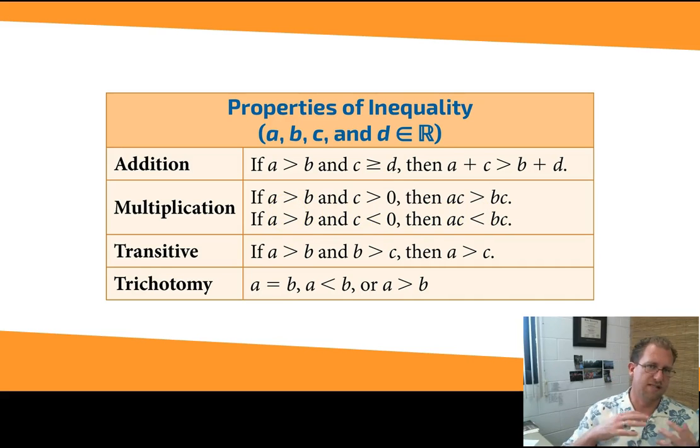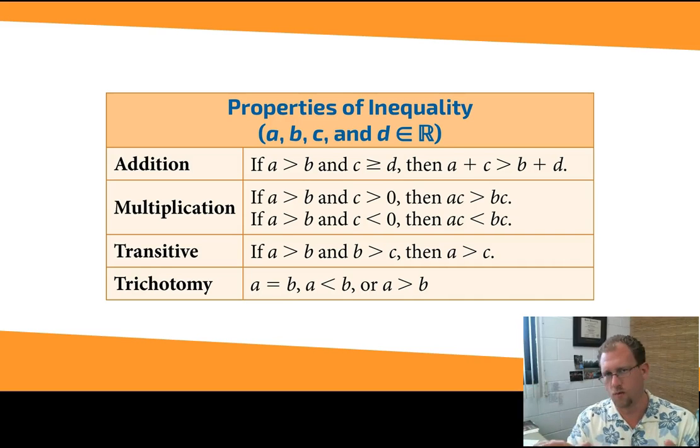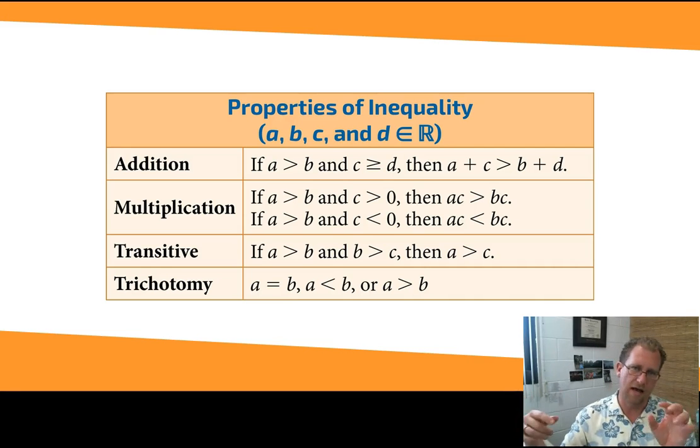Transitive. Just like inequalities, if A equals B and B equals C, then A equals C. Well, if A is greater than B and B is greater than C, then A is greater than C. Transitive works just fine. Just make sure that you keep the signs all in the same direction. You can't have A is greater than B and B is less than C, and then say how A is circulated. You don't know that. But if all the inequalities point the same direction, then transitive works.